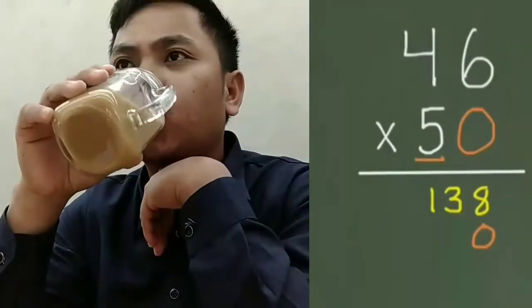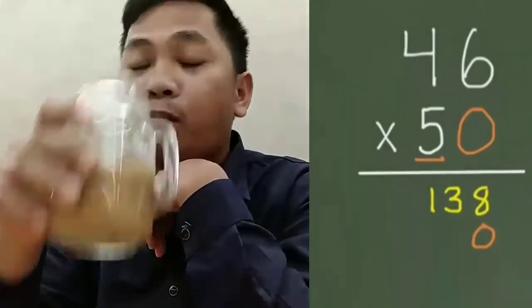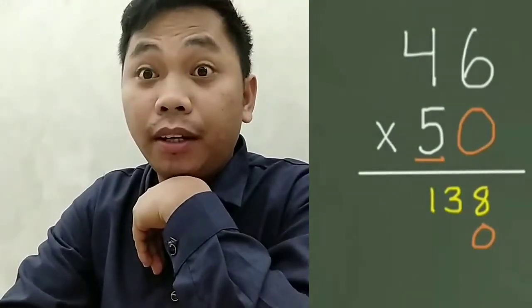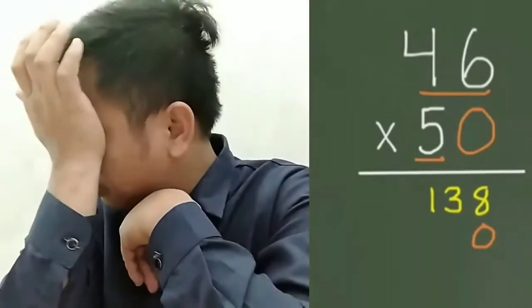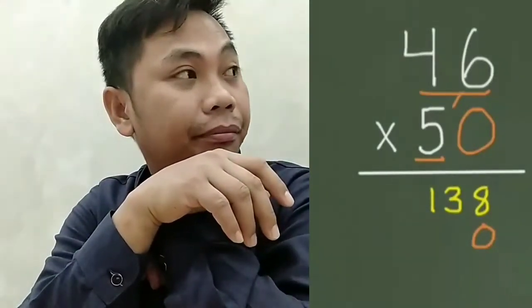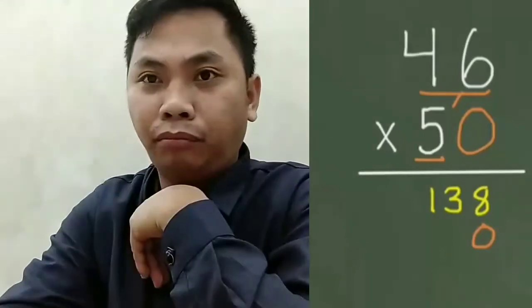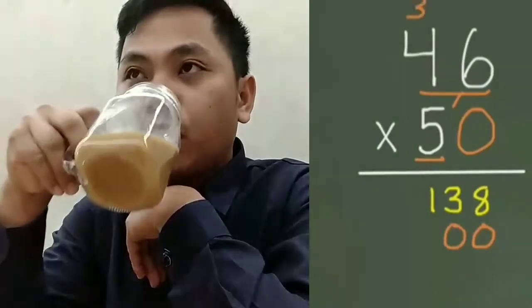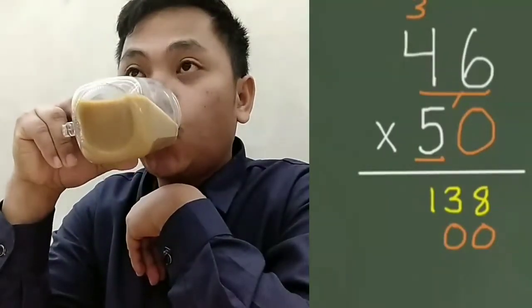Now we can multiply the 5 times each digit in our top factor. Once again, we start with the ones place value. So 5 times 6 equals 30. We're going to put our 3 up above, our 0 down below.